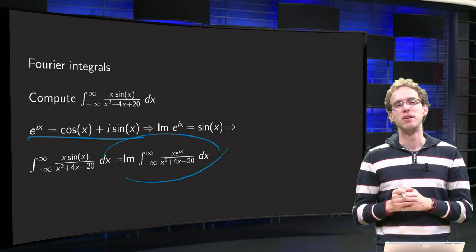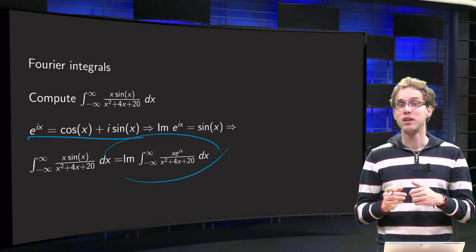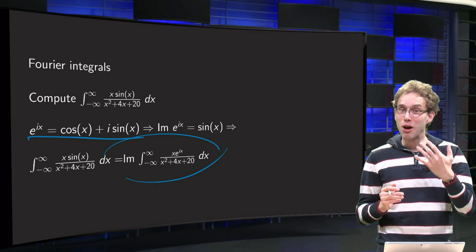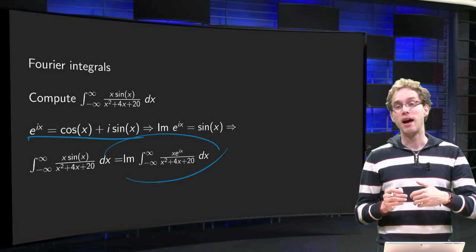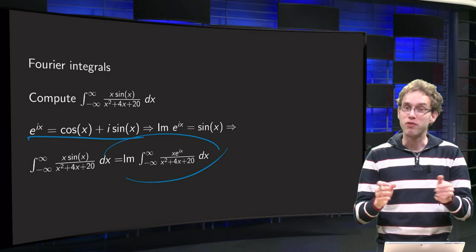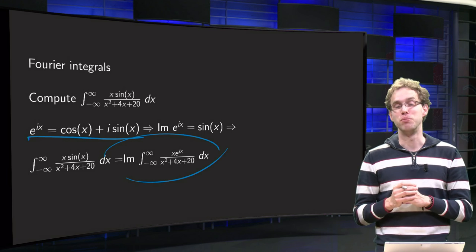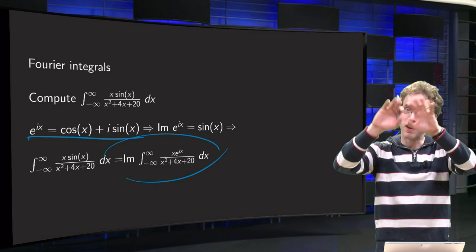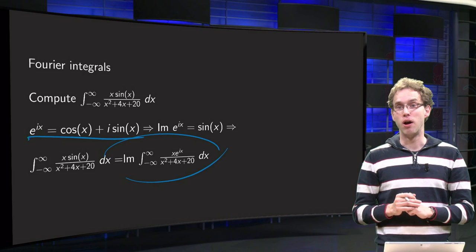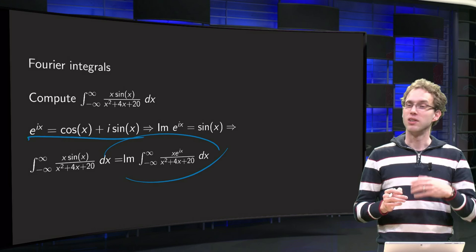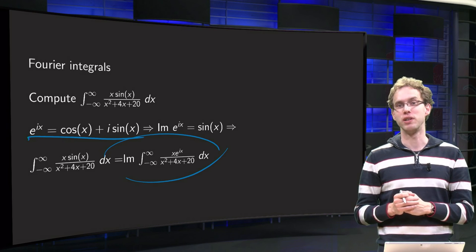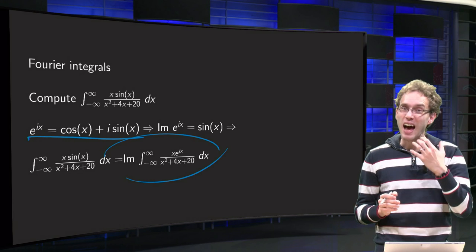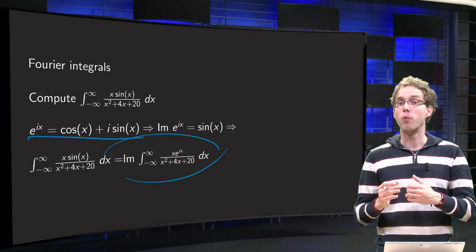Think about it: if you substitute z = x + iy, then e^(iz) becomes e^(ix) · e^(-y). In the upper half-plane, e^(-y) becomes very, very small. That's why e^(iz) is much better behaved and will vanish on the upper arc. This is something you always need to do when doing contour integration — think ahead and plan ahead whether your function and contour will work at all.